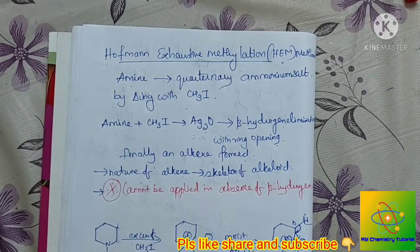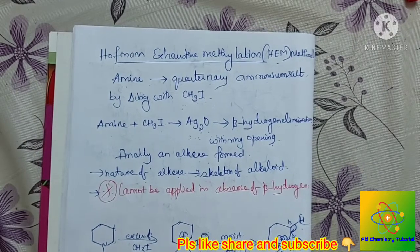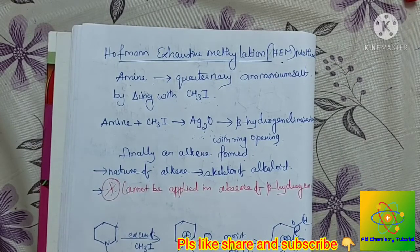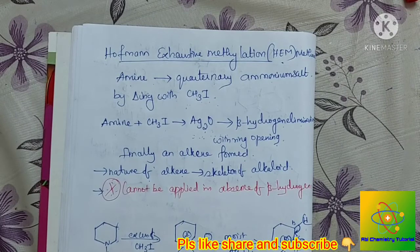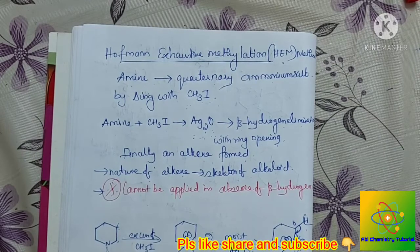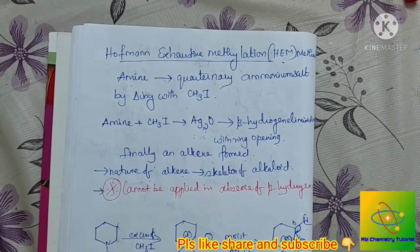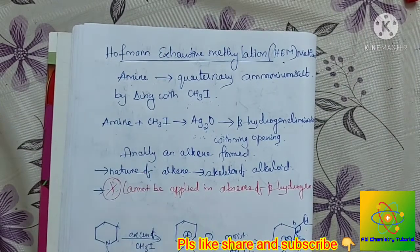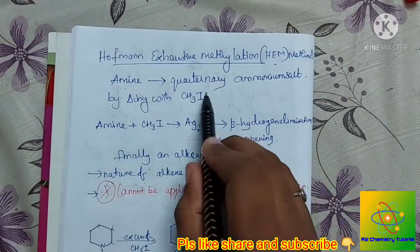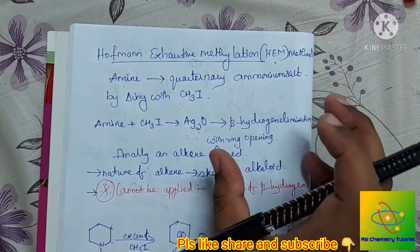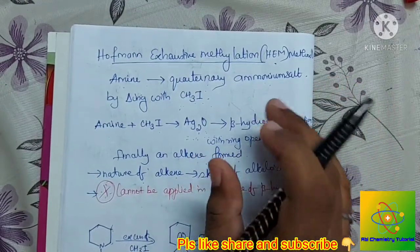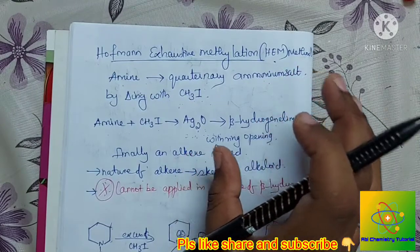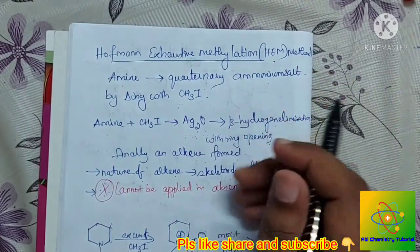In this video we are going to talk about the Hofmann Exhaustive Methylation Method. We are going to study the alcohol and the skeleton using this method — the structure elucidation method. I will add a quaternary ammonium salt by heating with methyl iodide, and that is the process step by step.